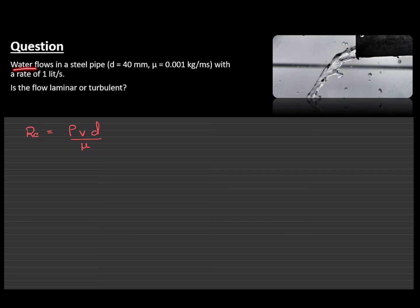Now, we know that it is water that's flowing. So, that means the density is going to be 1000 kg per meter cube. The velocity at which it is traveling, however, is not given to us in the question. So, we need to find it. Diameter is given and the viscosity as well is given. So, how can we work out what the velocity will be?